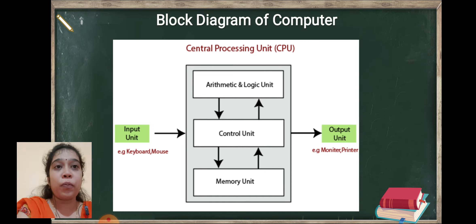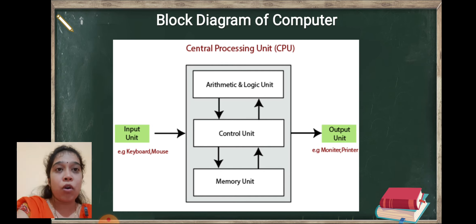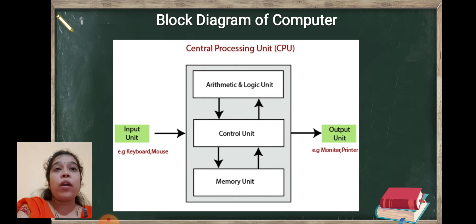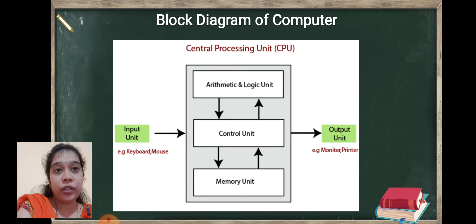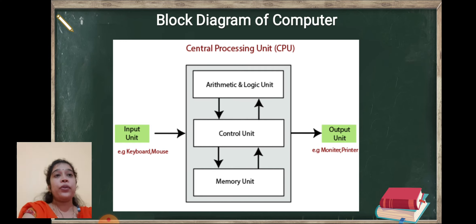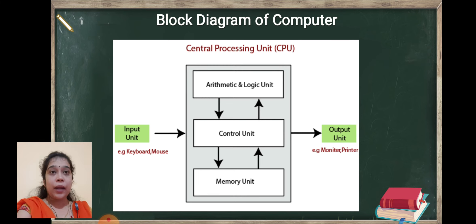Next is an important point which is the block diagram of the computer. The block diagram of the computer is divided into three units: first is input unit, second is output unit, and in the middle is CPU, that is central processing unit.